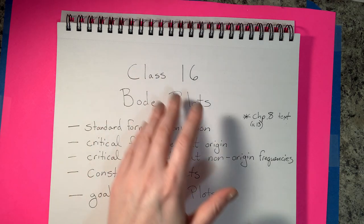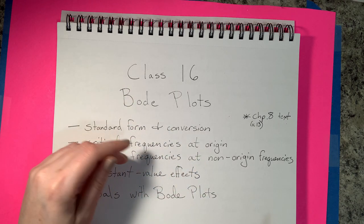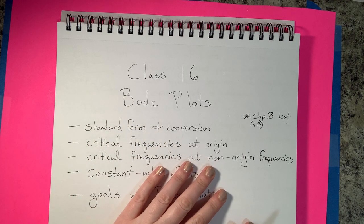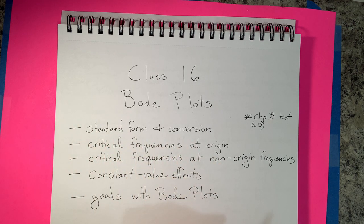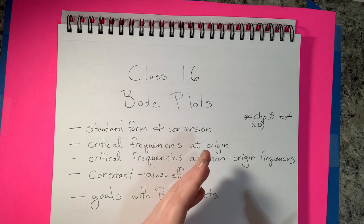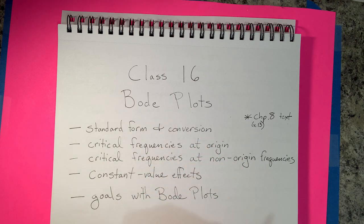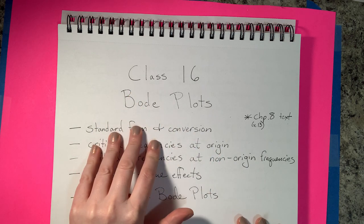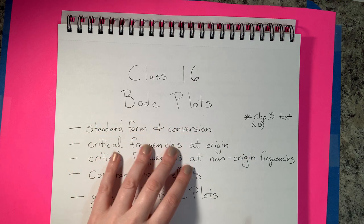In this class we'll talk about Bode plots — really the approximate way of sketching Bode plots. This is necessary because we're going to be able to get a good view of what's happening with a system over a frequency range, basically everything that happens with the magnitude and phase. We can also take a Bode plot, take points from it, and draw the Nyquist plot from that, so it's really useful for that reason.